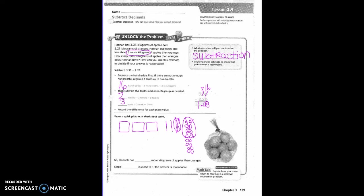How many tenths do I mark off? 2, so the last 2 I have remaining. And then how many ones or flats? 2. How many ones do I have left? 1. I put my decimal. How many tenths do I have? 0. And how many small cubes or hundredths? 8. So Hannah has 1 and 8 hundredths more kilograms of apples than oranges. Since 1 and 8 hundredths is close to 1, the answer is reasonable.